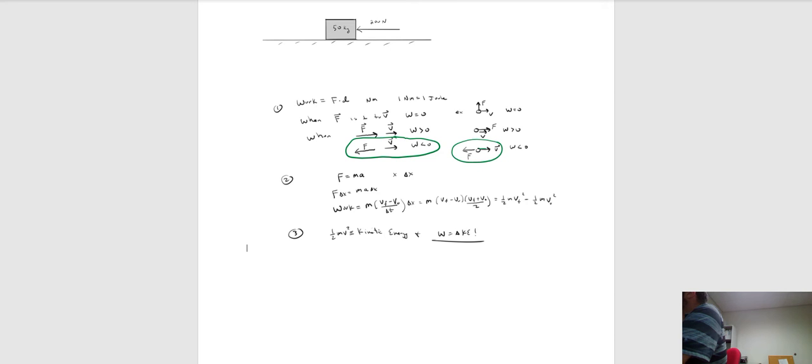Case three: whenever the force and the velocity are in opposite directions, the work done is negative. If we have an object moving to the right but the force is to the left, then the work is some negative number.